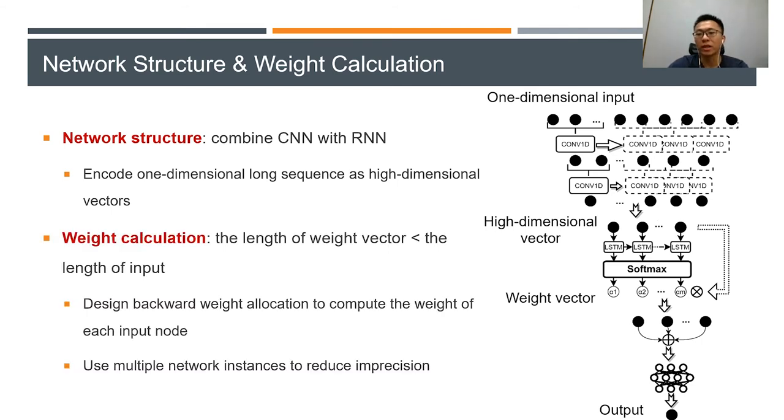After encoding, the length of weight vector is smaller than the length of input. So we designed the backward weight allocation algorithm to compute the weight of each input node and use multiple networks to reduce imprecision.